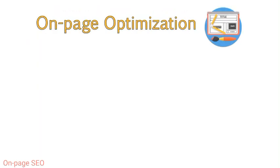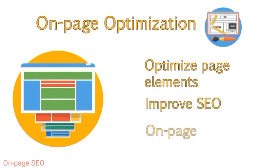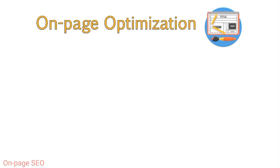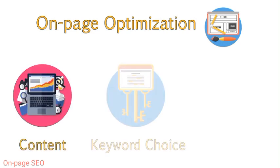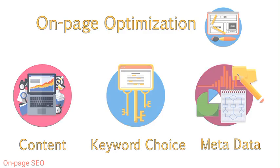On-page optimization is the practice of optimizing elements of a page or a group of pages throughout a site to improve the SEO of the site as a whole. We call this on-page because we focus on various elements within a page or the code of a page. This refers to the content on the page, keyword choice for the page, and optimizing the page's metadata.